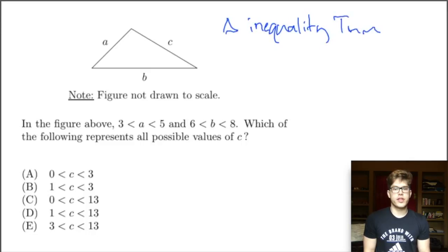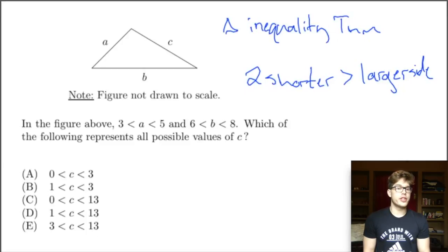And what does this theorem say? It basically says the two shorter sides of the triangle need to sum and be greater than the larger side. So this is the math we need to know. This is what this question is testing us on. And now that we know this, now that we have this written down, what are our possible, what are our possibilities for c?